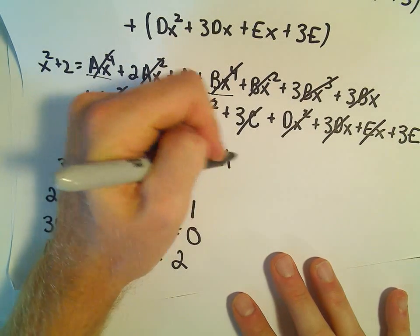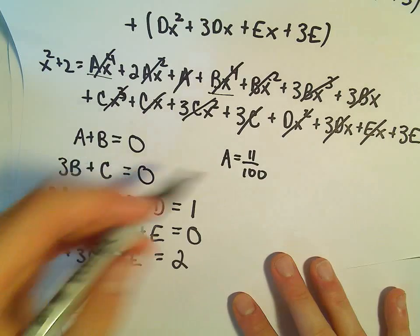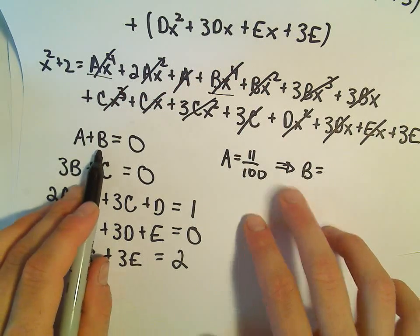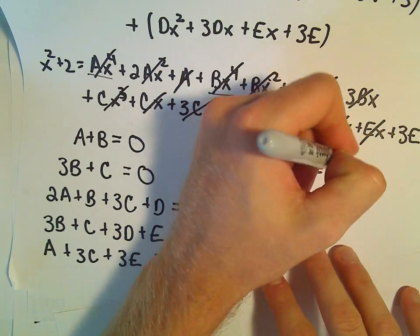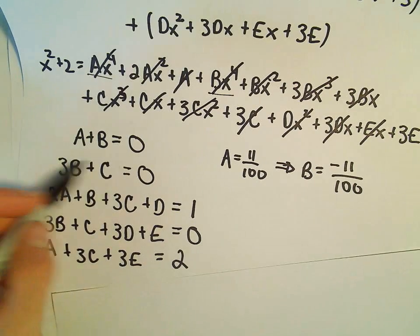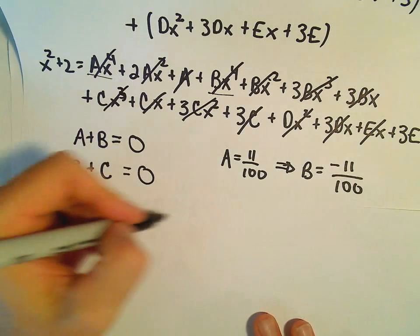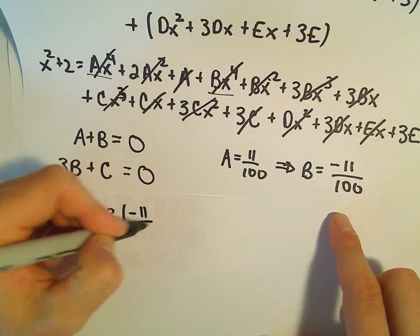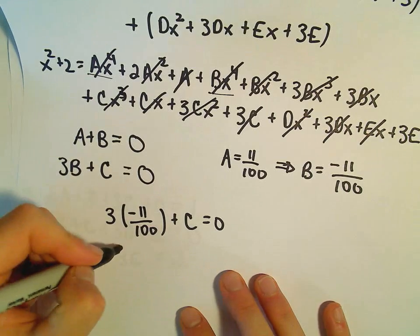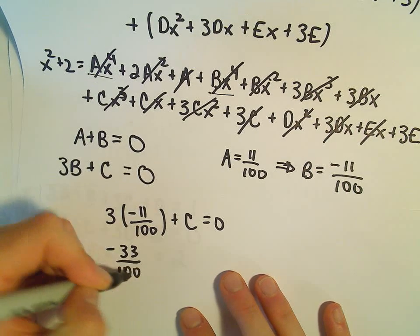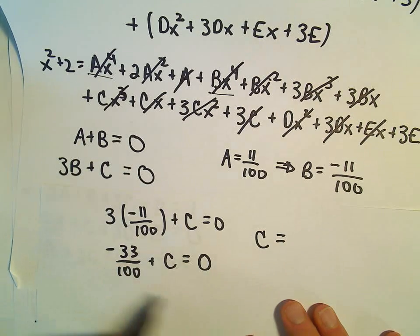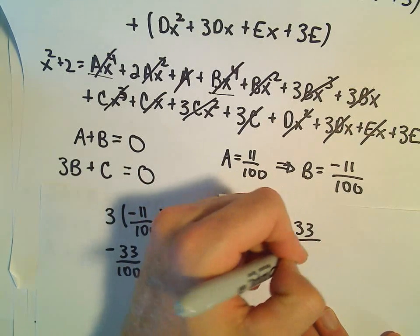With A equals 11 over 100, and A plus B equals zero, B must equal negative 11 over 100. Now we can use that to solve for C: 3 times B is negative 11 over 100, plus C equals zero, so C equals 33 over 100.